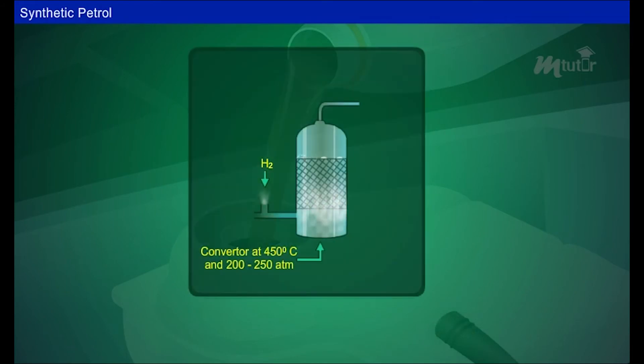The paste is then heated with hydrogen at a temperature of 450 degrees Celsius and atmospheric pressure of 200 to 250 atmospheres for one and a half hours.